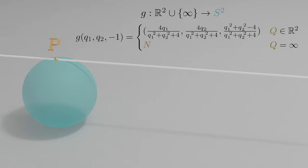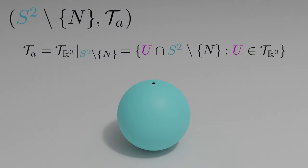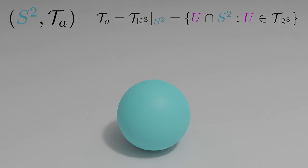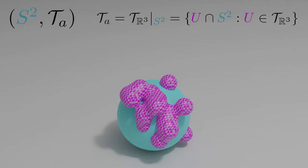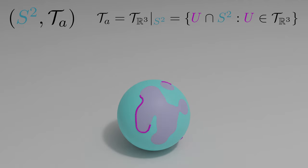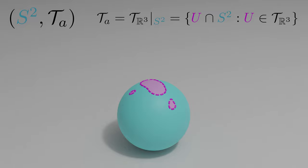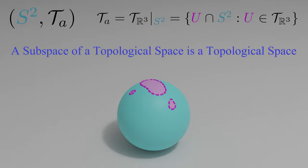I'm again redefining this function as g instead of f inverse because we haven't proven that g is f inverse. In part 2, we worked with the punctured sphere and its standard subspace topology. In this video, we'll be working with the entire sphere and its standard subspace topology. We form an element of this topology by intersecting an open subset of R3 with the sphere. This time, tau A includes all open neighborhoods of the north pole. Because subspaces of topological spaces are themselves topological spaces, tau A is indeed a topology on our sphere.